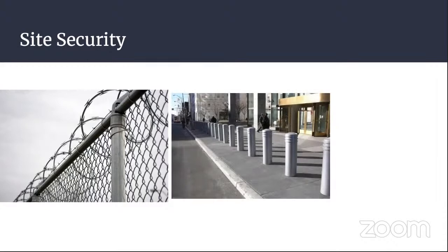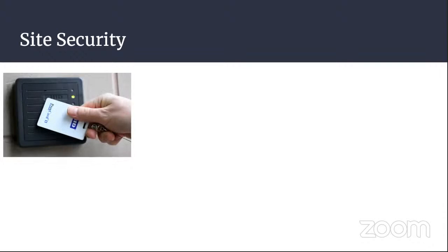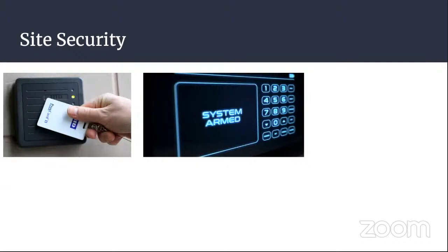Another physical control is a bollard — posts or other obstacles that prevent vehicles from moving through an area, like in those infamous YouTube videos of cars crashing into businesses. Lighting doesn't allow any shadowed or dark areas, which will discourage intruders from thinking they can be sneaky. Having badges — either magnetic strip or radio frequency — means doors only open when a certain badge is presented. Alarms detect and alert about issues, including unauthorized access, environmental problems, and fires, and can be remotely or locally monitored.